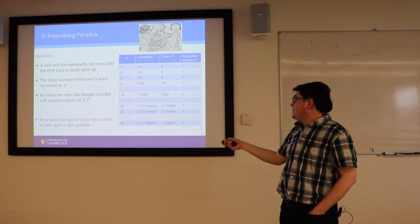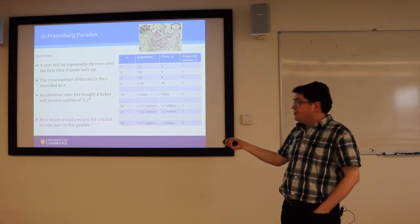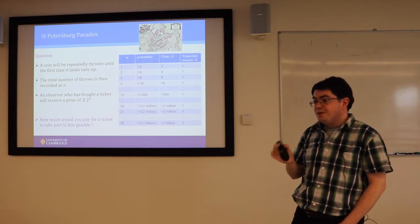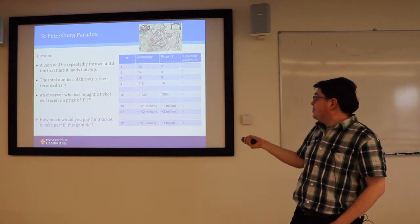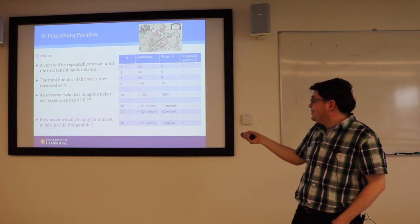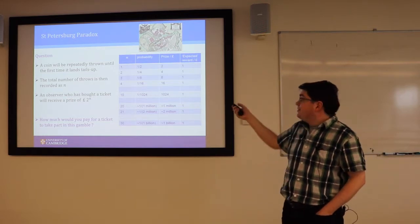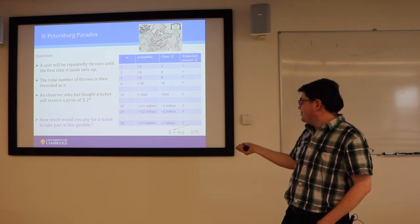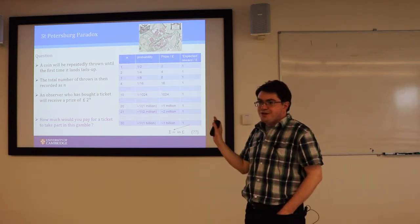Down to very high numbers of throws with one in a million probability-ish of it being flipped 20 times. But it would pay the ticket holder a million pounds, so they expect to get a pound. And if you add up this list of expected reward, you get the troublesome infinity pounds, double question mark. Looks like rubbish.